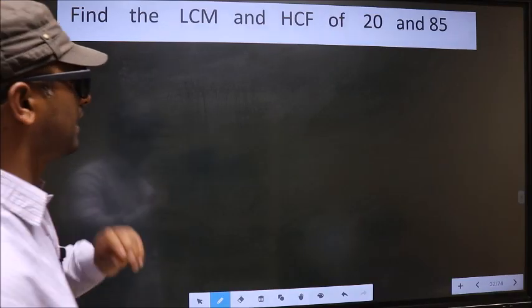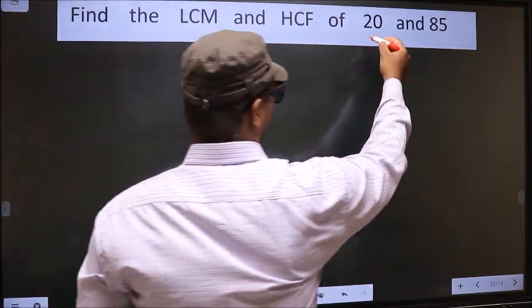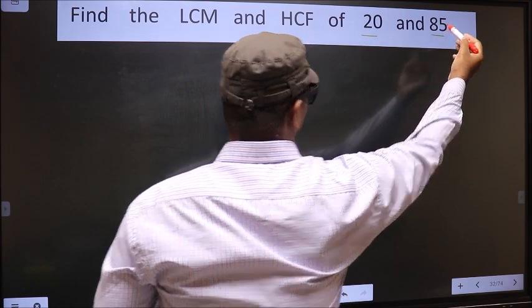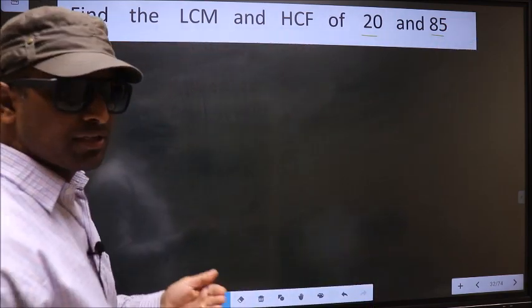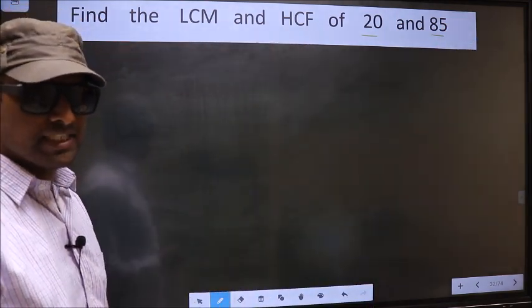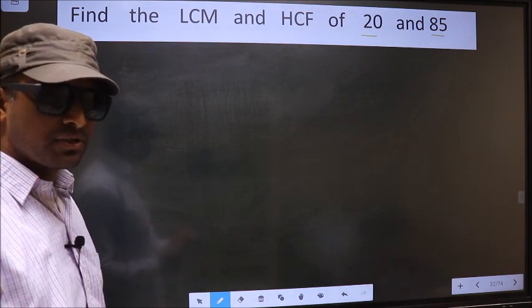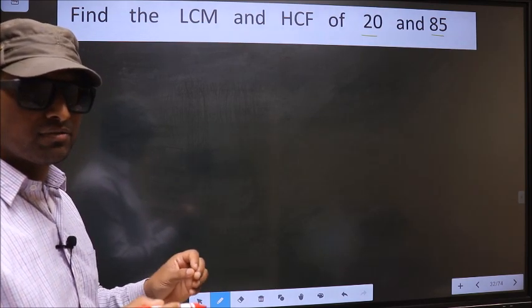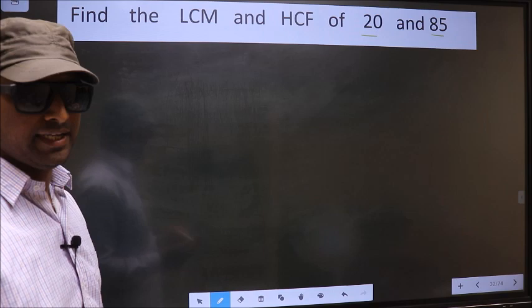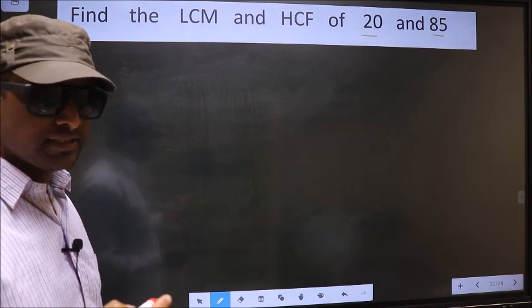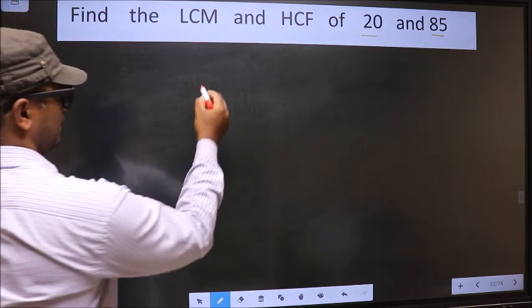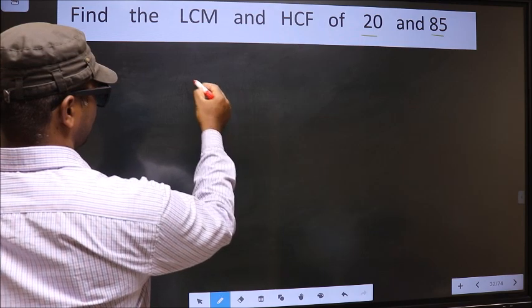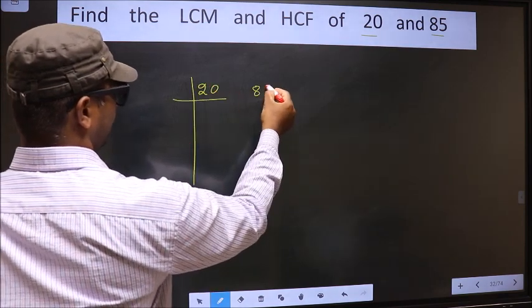Find the LCM and HCF of 20 and 85. To find the HCF and LCM, first we should do the prime factorization of each number separately. What I mean is, see, 20 and 85.